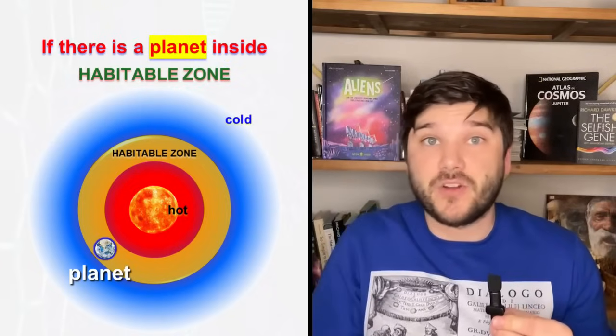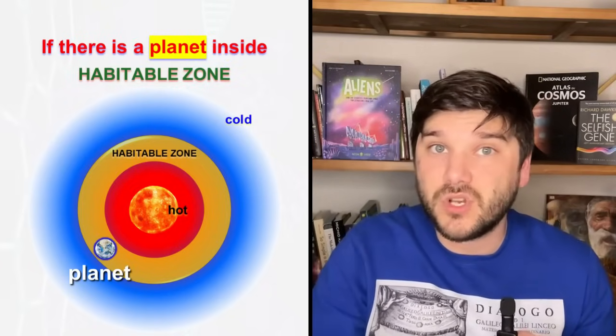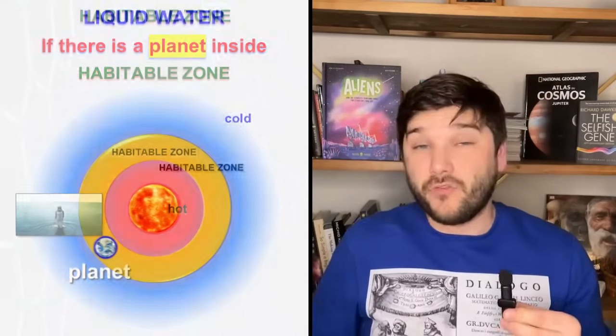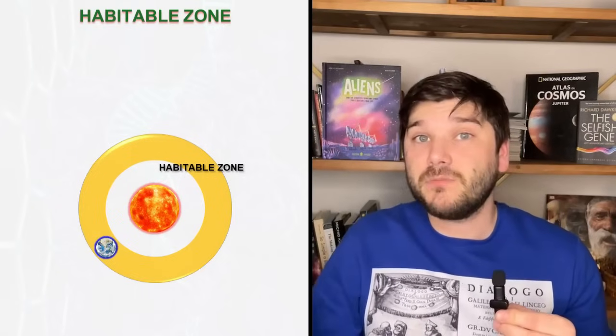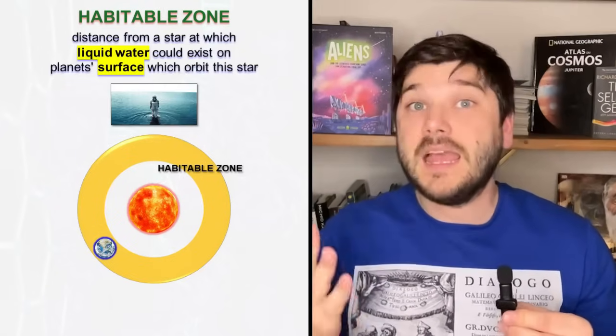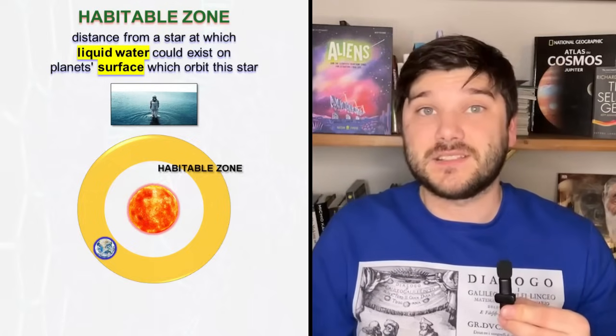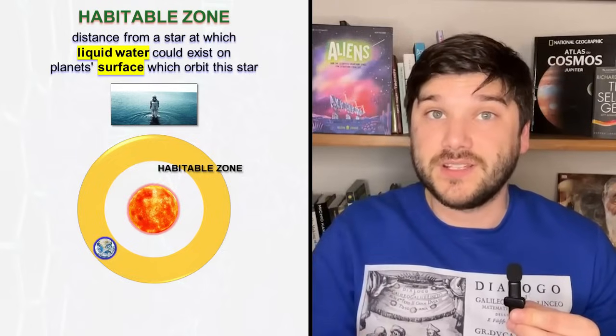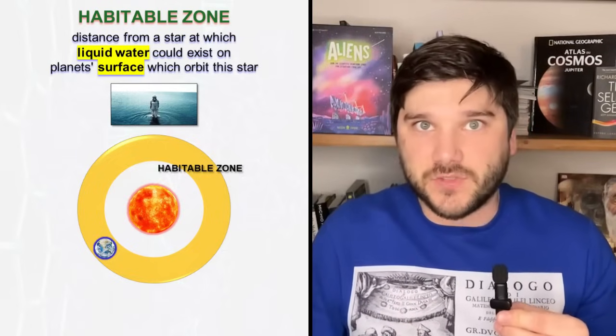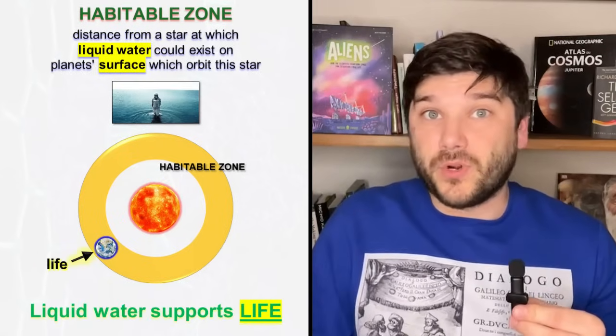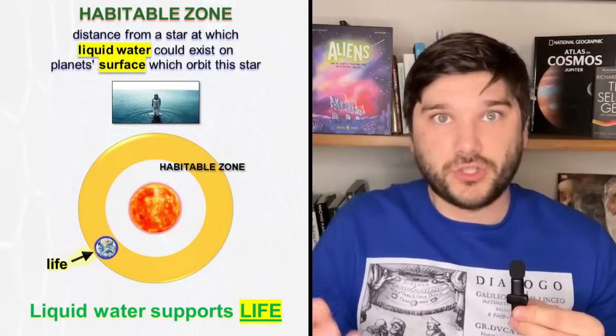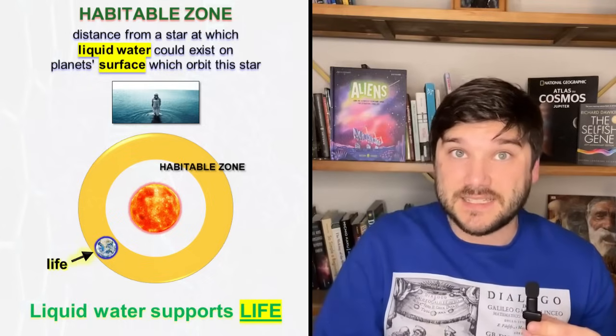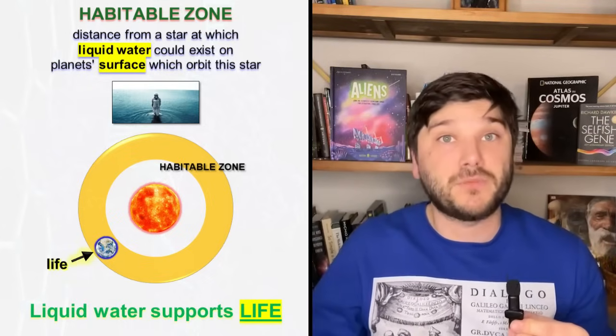If there happen to be a planet around a star which is located in a habitable zone, then there can be liquid water on the surface of this planet. Therefore, we can define a habitable zone in a more precise way. Habitable zone is a distance around the star at which liquid water could exist on planet's surface which orbits this star. If there is a liquid water on a planet's surface, it can support necessary biochemical reaction to generate life. In other words, life on a certain planet can exist if this planet located inside habitable zone.